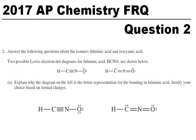Two possible Lewis electron diagrams for fulminic acid, HCNO, are shown below. Explain why the diagram on the left is the better representation for the bonding in fulminic acid and justify your choice based on formal charges.